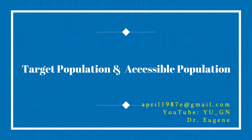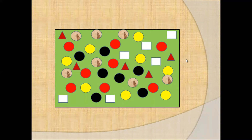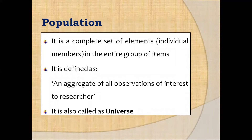Data collection can be carried out either from the population or from a fraction of the population. So let us first see what is population with respect to research. In research, when each and every element or individual present in the group or items of interest to the researcher are included for data collection, this is referred to as population. Another synonym used for population in research is the term 'universe.' By definition, population is an aggregate of all the observations of interest to the researcher.